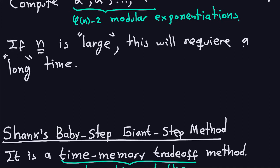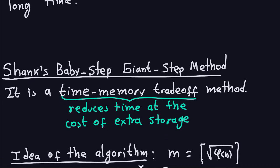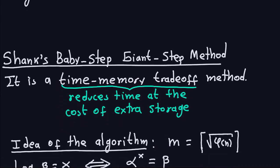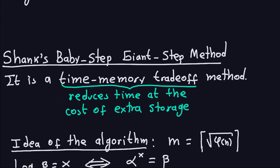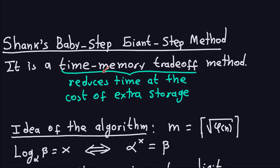The algorithm we're going to describe today — Shanks' baby-step giant-step method — is a time-memory trade-off, meaning it's going to reduce computation time at the cost of extra storage. What we're going to do is store and later look up a table of data, which I'll explain in a second.